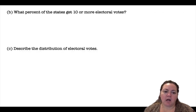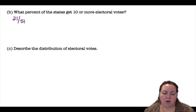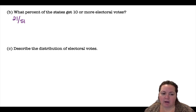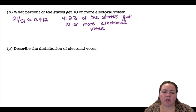What percent of the states get 10 or more electoral votes? So 21 out of the 51 had 10 or more electoral votes — including the 10s and everything above. So 21 out of 51, or about 0.412, meaning 41.2 percent of the states get 10 or more electoral votes.